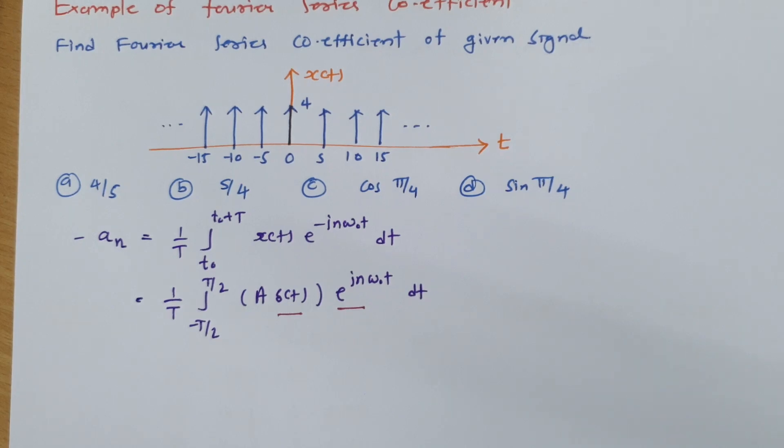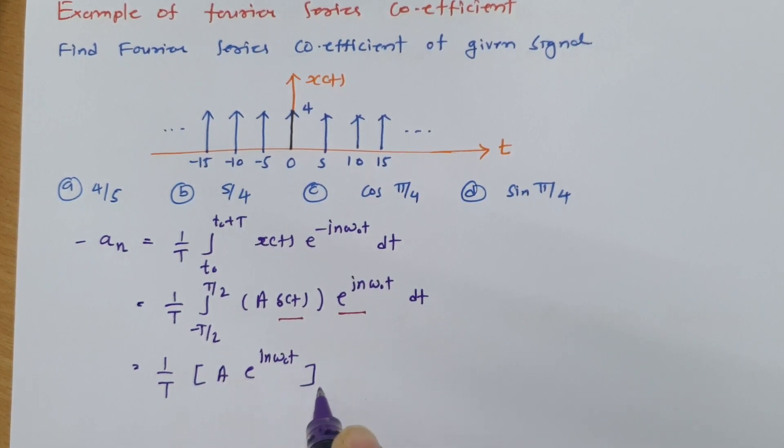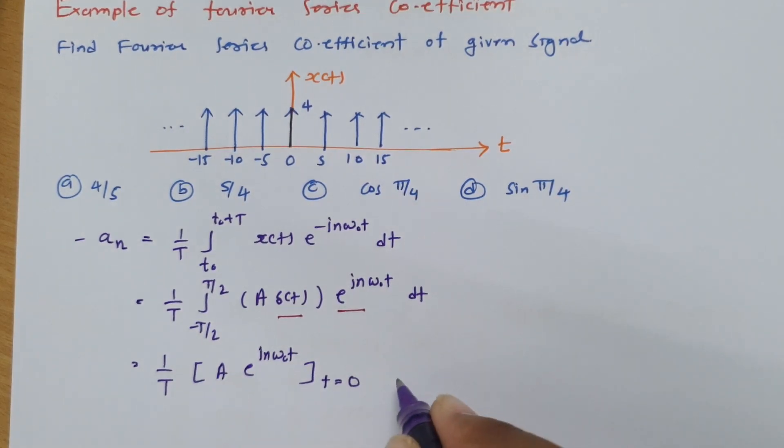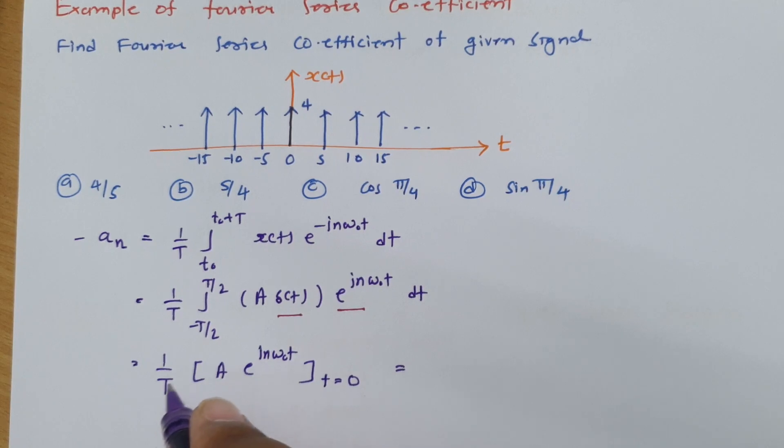To have the final value, we just need to place 1 by T, this function a into e to the power jn omega 0 t, where we need to place t equals 0. If you do this, e to the power 0 is 1, so that will be a by T.